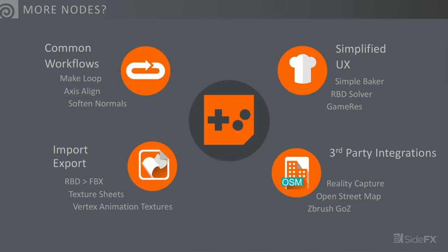We cover a broad range of stuff: common workflows — things done over and over that should be a repeatable tool. Import/export is a big one — how do you get things out of Houdini into your game engine? There's a lot of time wasted there, and the shorter we can make that, the more iterations you can do. Simplified UX: sometimes there are ten nodes to do something standard, so we wrap that up and expose the most important controls for 80% of the work. We also focus on third-party integrations like the ZBrush GoZ bridge, Reality Capture, and OpenStreetMap.